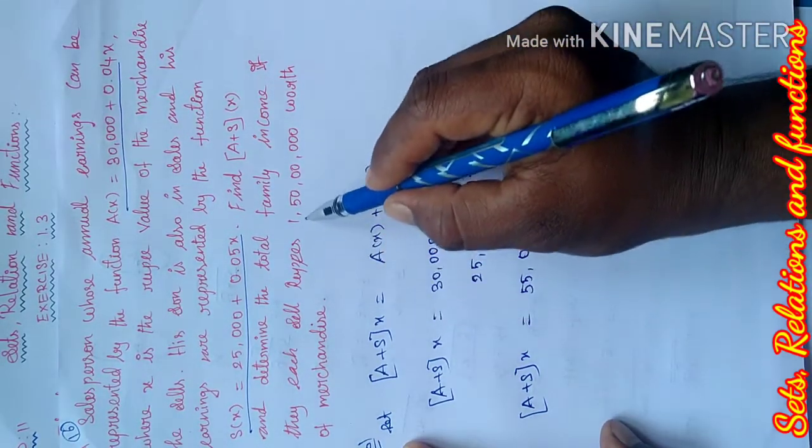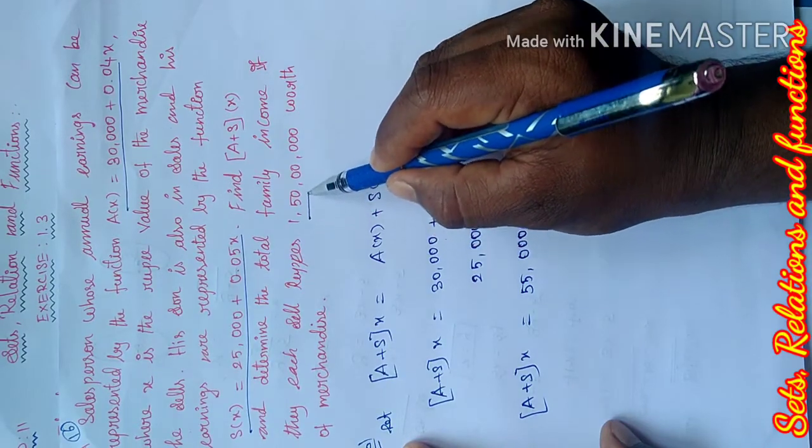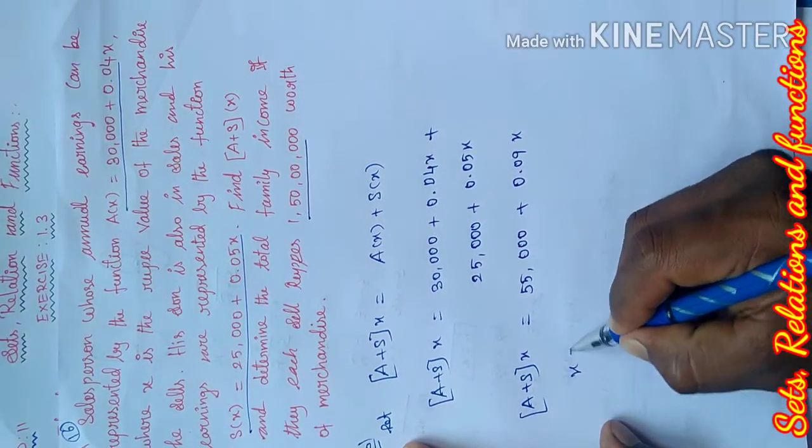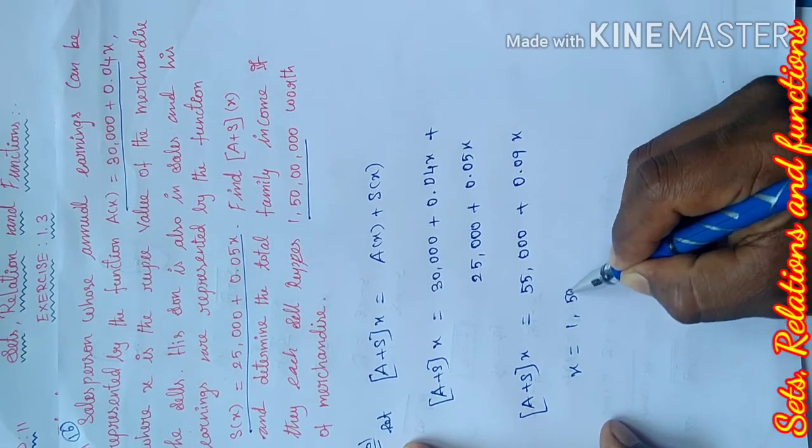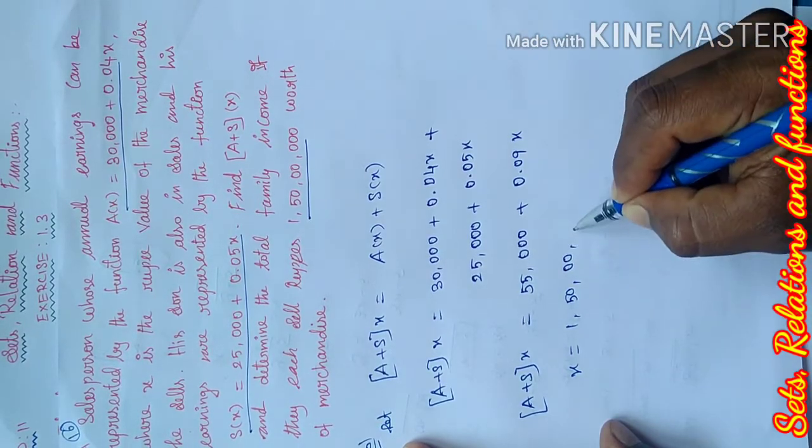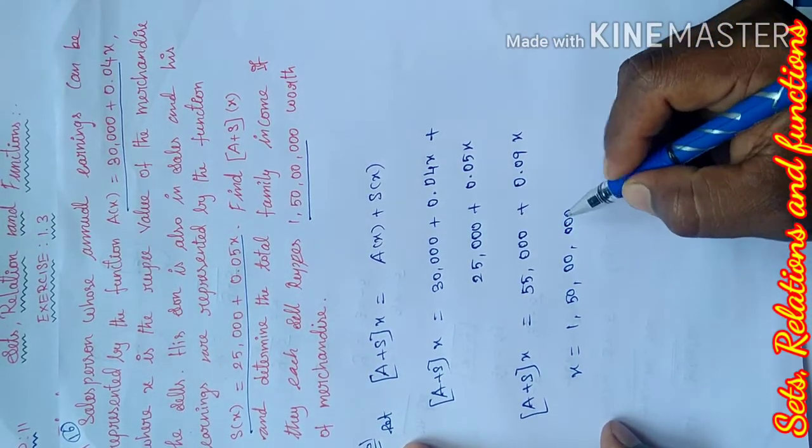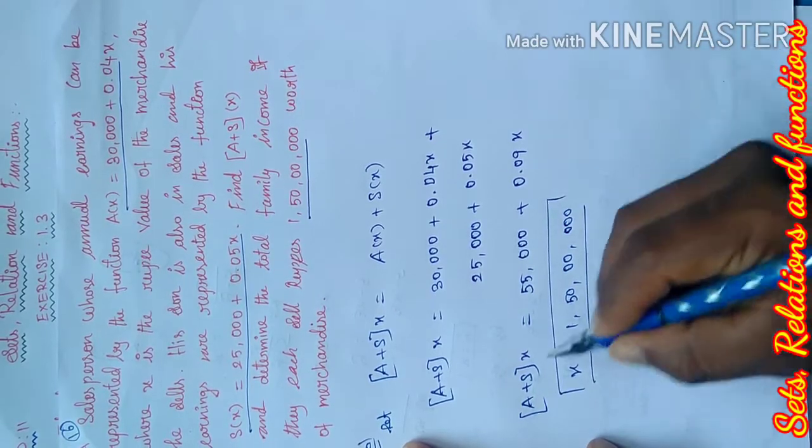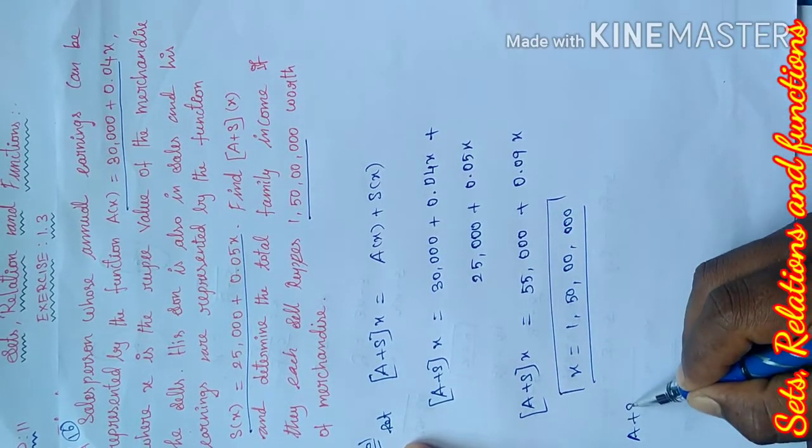Now we apply the x value to find the family earning. The sales rupees value is x equals 1,50,000. This is the x value we'll apply. Therefore, A + S...